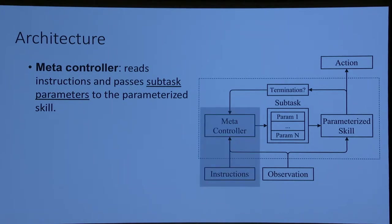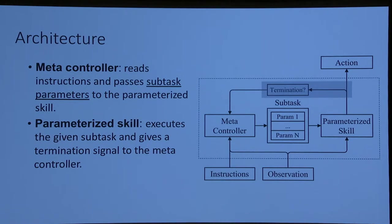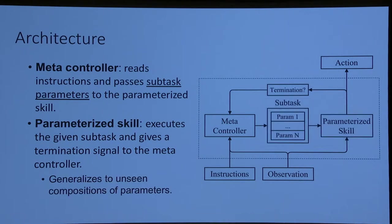We construct a hierarchical reinforcement learning architecture with a meta-controller and a parameterized skill. The meta-controller reads the instructions in language form and passes categorical subtask parameters to the parameterized skill, which executes the subtask and gives a termination signal back to the meta-controller. The meta-controller then moves on to the next instruction. All of this must be interruptible: if the bonus box appears, the agent halts, remembers where it was in the instruction list, takes advantage of the opportunity, then pursues the overall task. It must also generalize to unseen combinations.